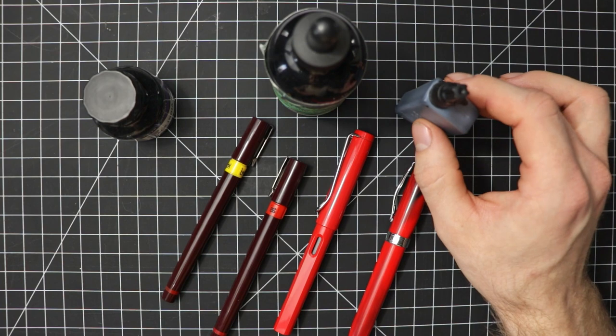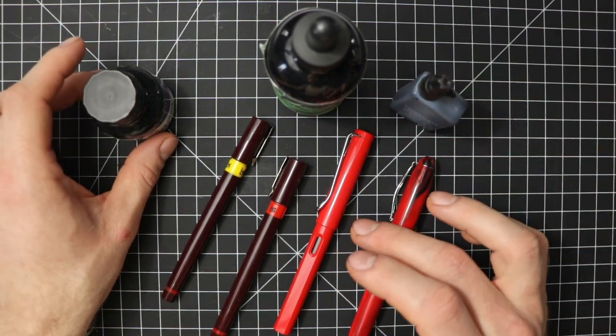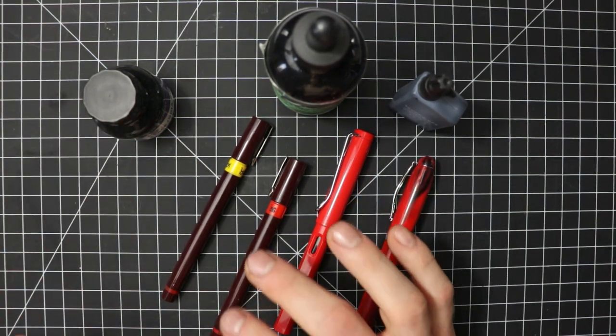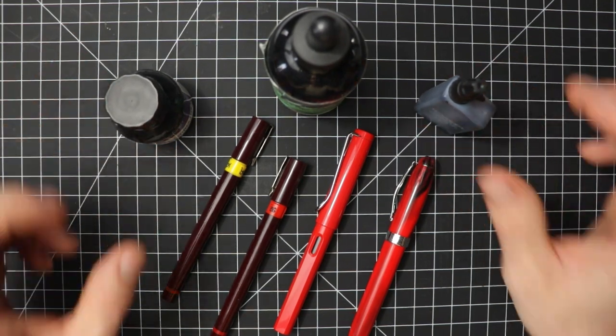So the question I got was can I use ink that is for a fountain pen in a rotary pen or vice-versa, such as the ink from a rotary pen in a fountain pen. Now the short answer is no.